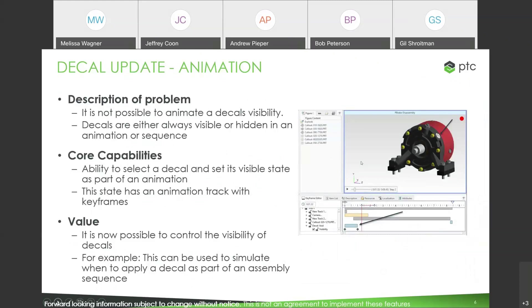Decals. In the last release we added the concept of decals — being able to put stickers on your parts. In this release, we've updated decals to include the ability to animate the visibility of a decal. You're not going to make the decal move around, although it will move if the part it's attached to moves. This is primarily so that in a sequence step you can make the decal visible — simulating, for instance, when you apply the decal during assembly. It is purely a visibility toggle: hidden or not.